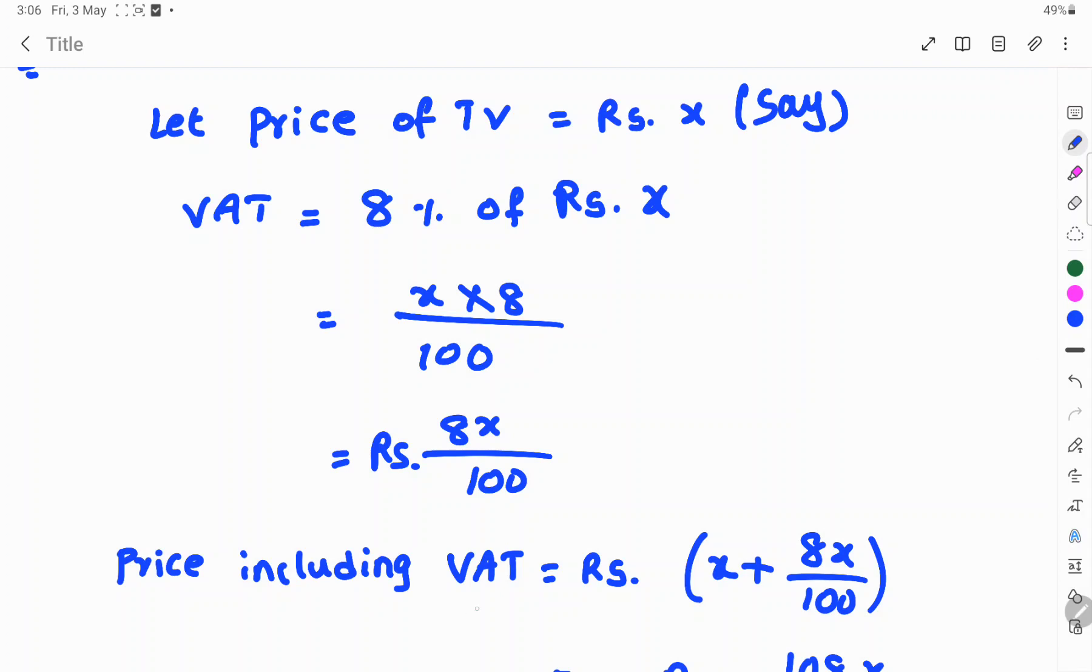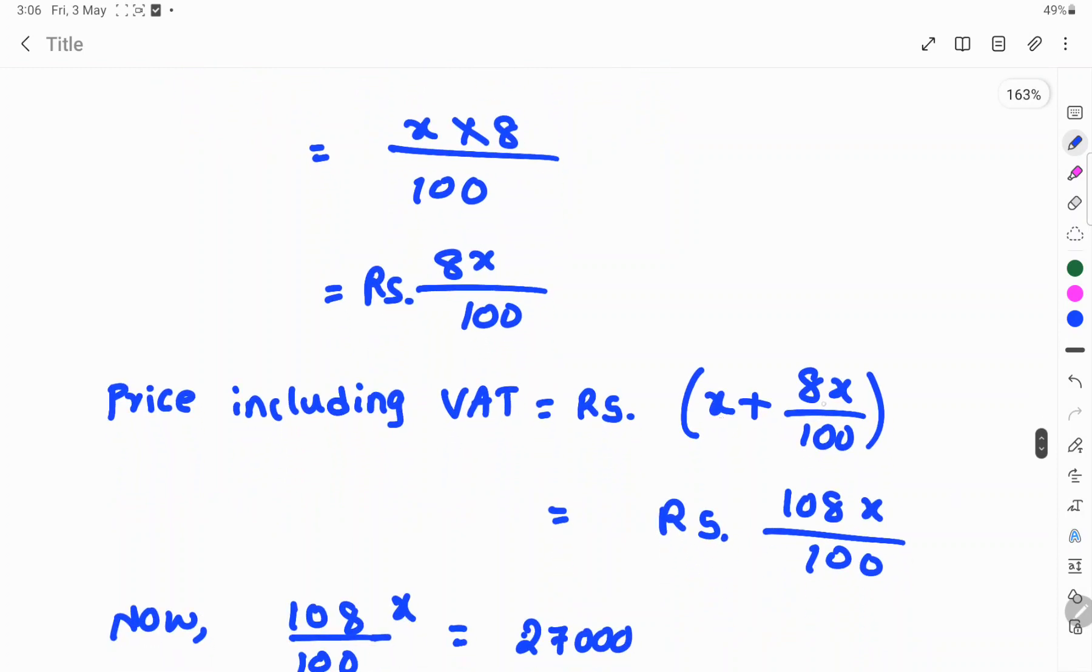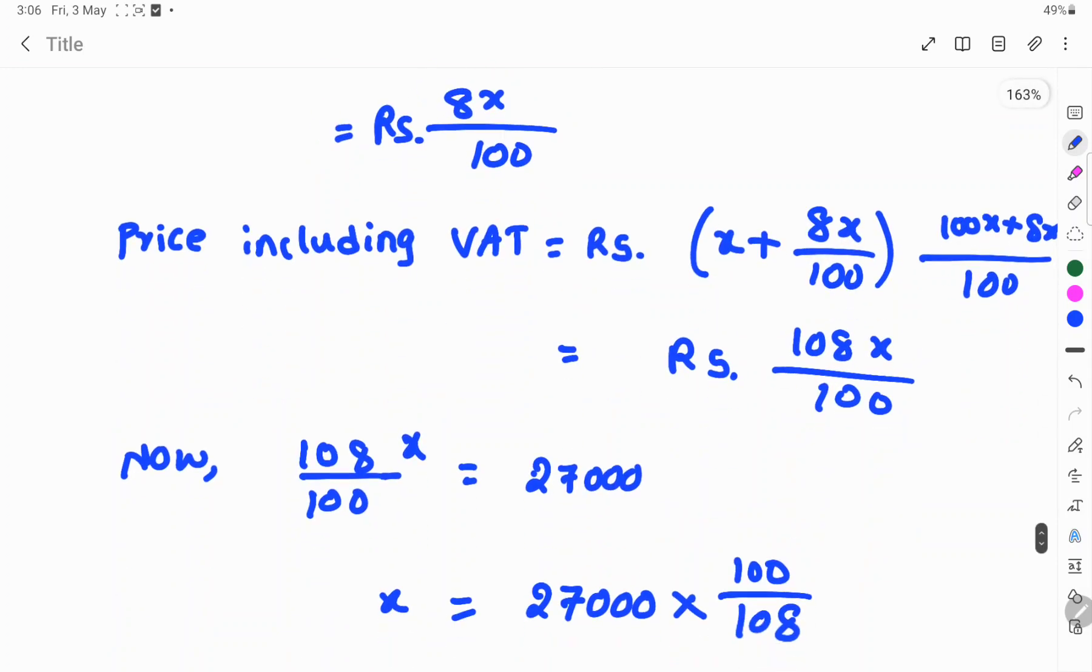Price including VAT is equal to x plus 8x by 100. x plus 8x by 100, LCM is 100, so 100x plus 8x by 100. That implies 108x by 100.